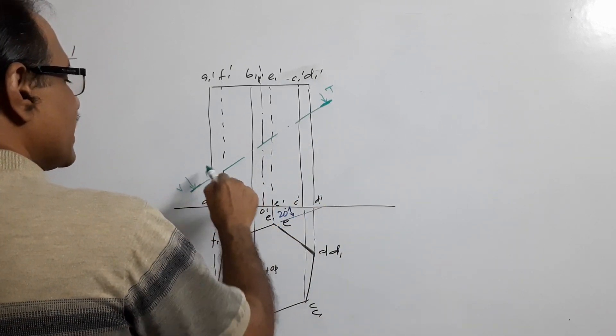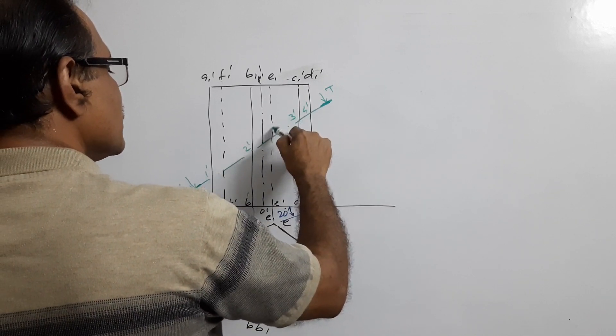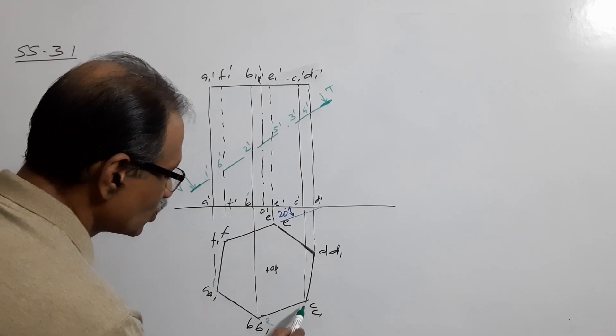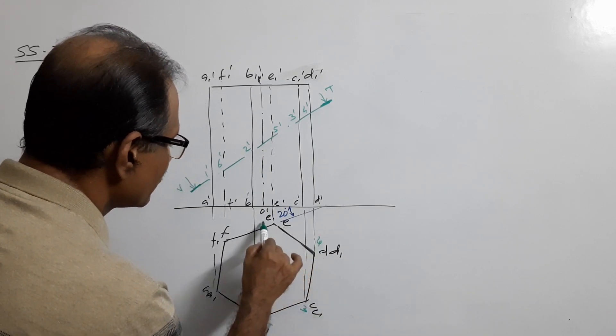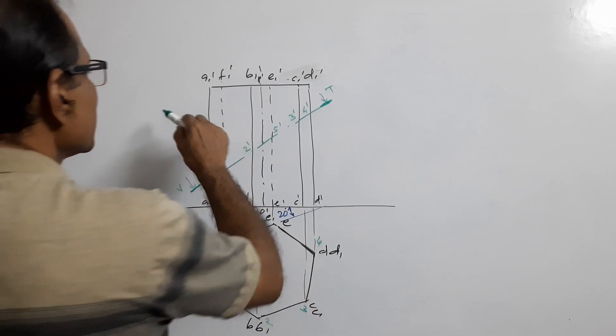Where does it cut? Mark points 1 dash, 2 dash, 3 dash, 4 dash, 5 dash, 6 dash in elevation. When you come to the plan, mark points 1, 2, 3, 4, 5, 6. Don't hatch it for the time being.